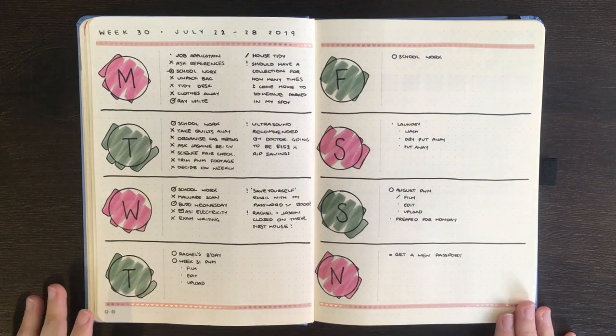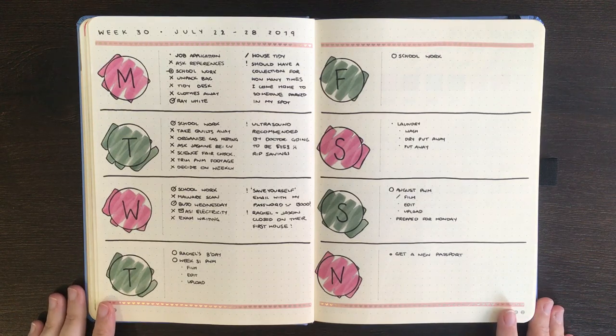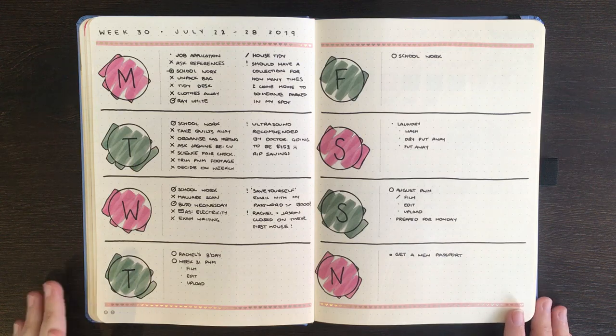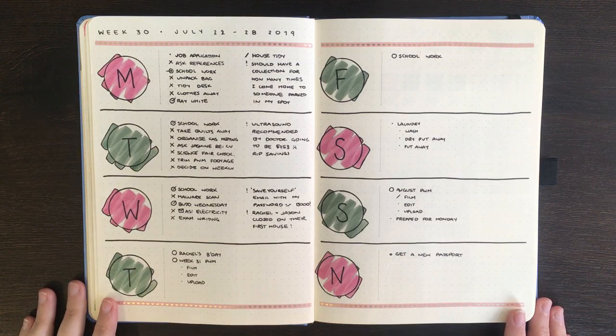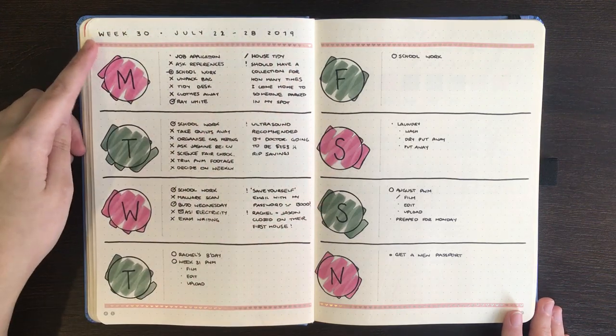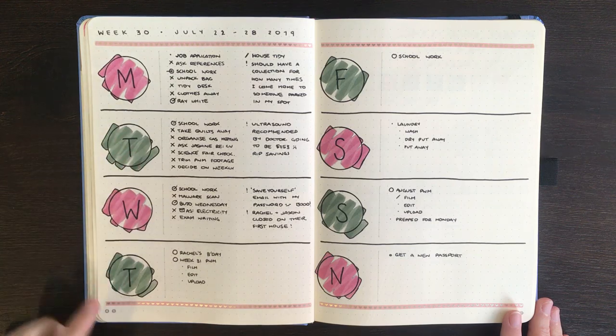So as you'll remember from my last plan with me video, last week's challenge was to do a 5-minute weekly spread. And for those of you with a keen eye, you'll probably notice that this is a little bit different to what we finished with last time. Since completing the 5-minute spread, I went and added a title at the top of the page, and I also did some small outlines around the outside of the circles for each of my days of the week.